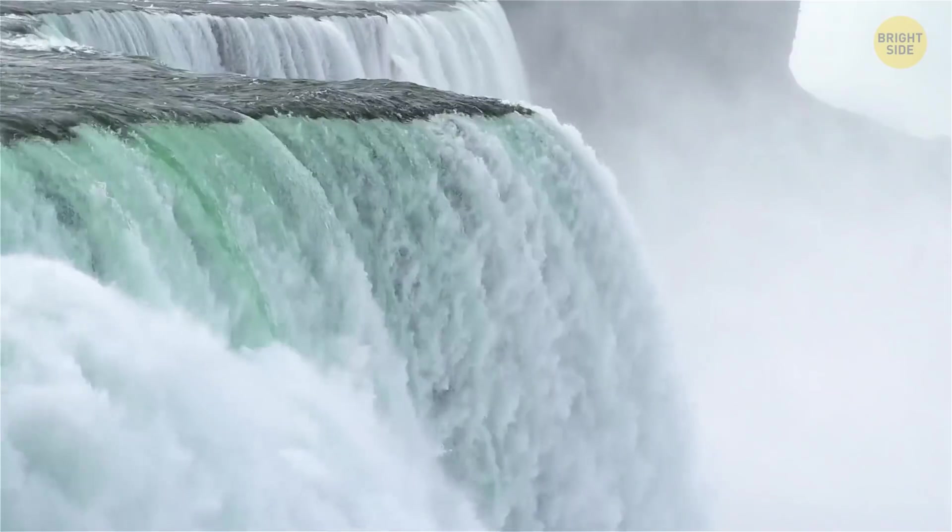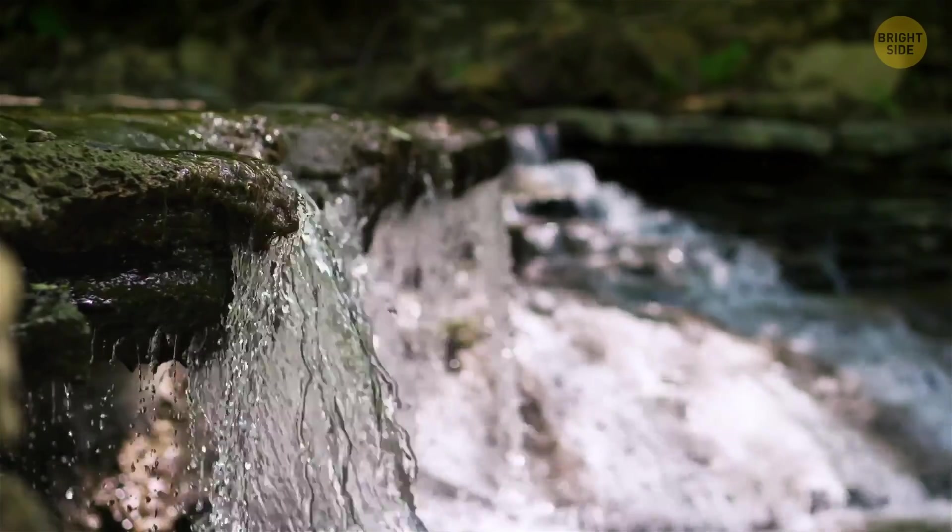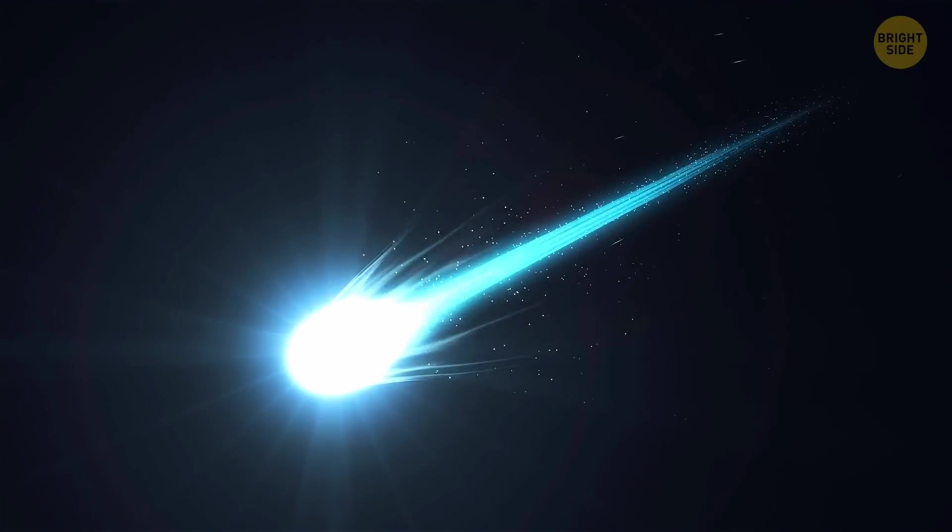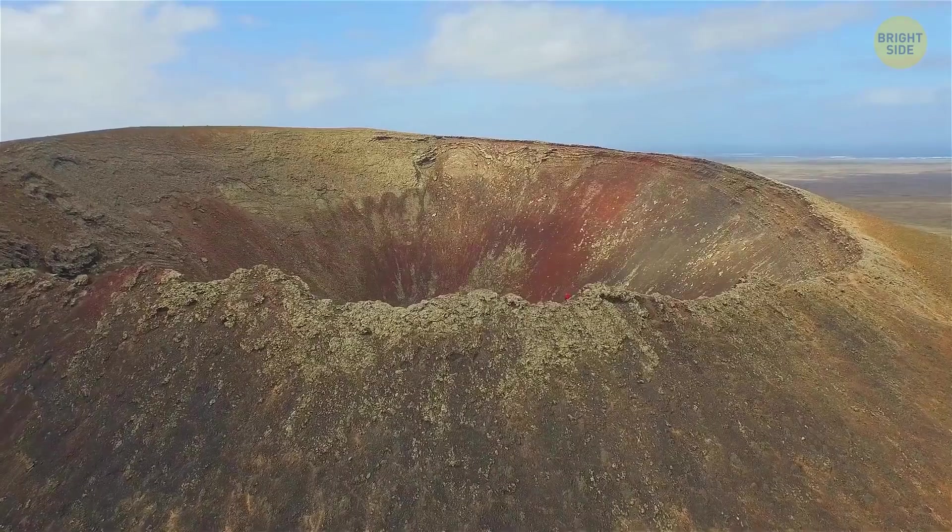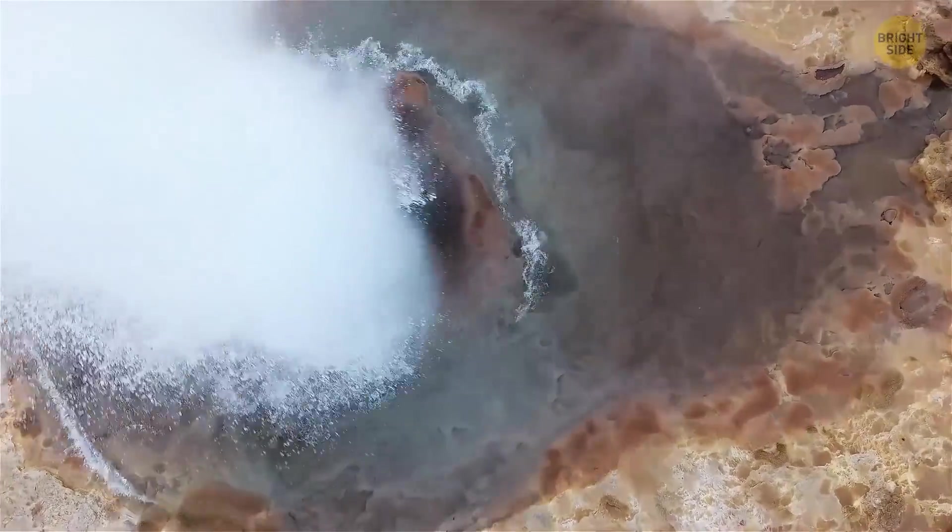Water on Earth is actually a puzzle shrouded in mystery and covered with riddles. The most popular theory is that it was brought to our planet by icy comets and asteroids that left behind not only mighty craters but the liquid substance, thanks to which we can now thrive.